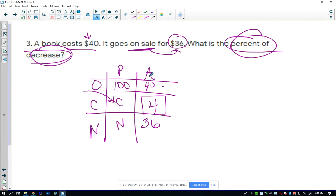It's change. So this is my proportion. So I have 100 over C equals 40 over 4. Cross multiply, I have 40C equals 400.